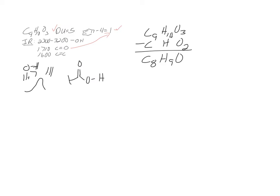Looking at the rest of the NMR: there are two messy-looking peaks — one worth two H's around 7.2 ppm, and one worth three H's around 6.9 ppm. They're in the benzene region and look like there's a lot of coupling going on, though it's not fully resolved.